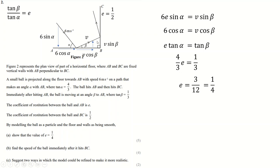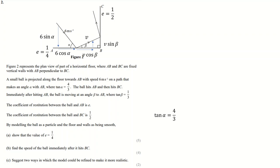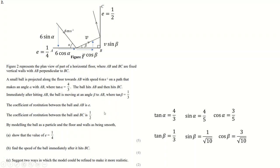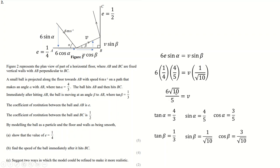Question 2b: find the speed of the ball immediately after it hits BC. Using tan α equals 4/3, that's a 3-4-5 triangle, so sin α equals 4/5 and cos α equals 3/5. For tan β equals 1/3, we get a 1, 3, √10 triangle, so sin β equals 1/√10 and cos β equals 3/√10. Using V sin β equals E times 6 sin α, with E = 1/4, sin α = 4/5, and sin β = 1/√10, I can solve for V.